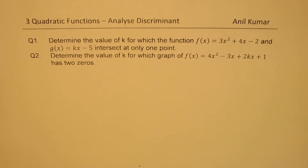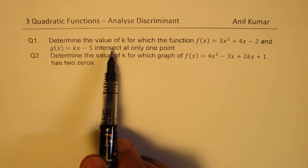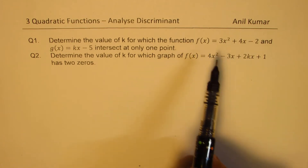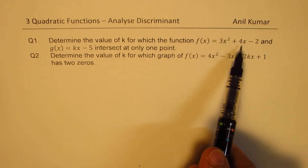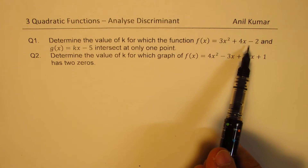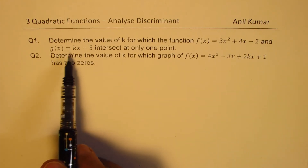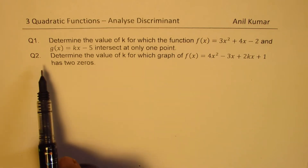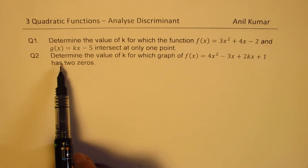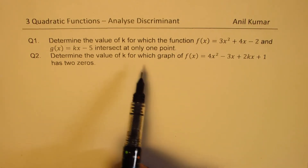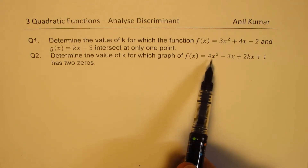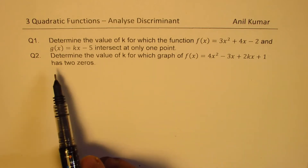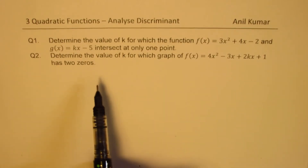Question number one: determine the value of k for which the function f(x) = 3x² + kx + 4x − 2 and g(x) = kx − 5 intersect at only one point. Question number two: determine the value of k for which the graph of f(x) = 4x² − 3x + 2kx + 1 has two zeros.